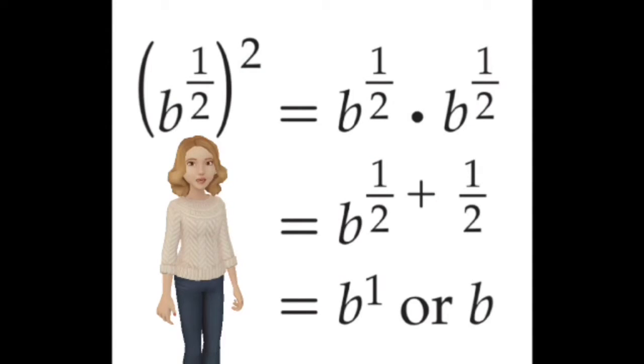In the picture behind me, you see an example of a rational exponent. b to the 1 half in parentheses, to the second power, equals b to the 1 half times b to the 1 half.